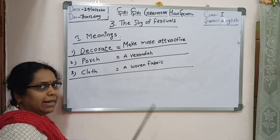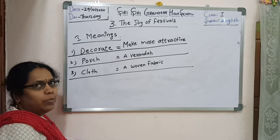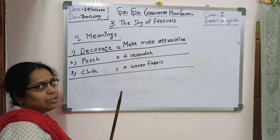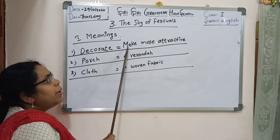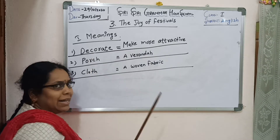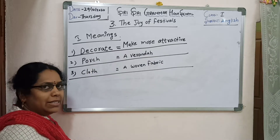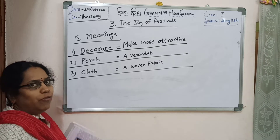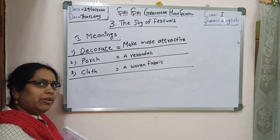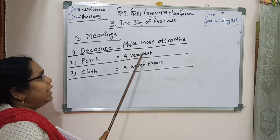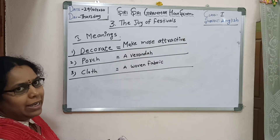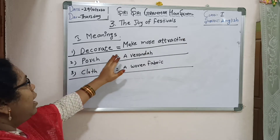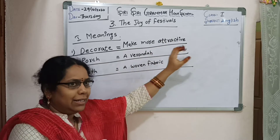Decorate — for example, decorate the house, decorate the classroom, decorate for a birthday party. When you decorate a house, you add something like bell stones, flower stones — whatever it may be. Decorate means adding things to make more attractive.